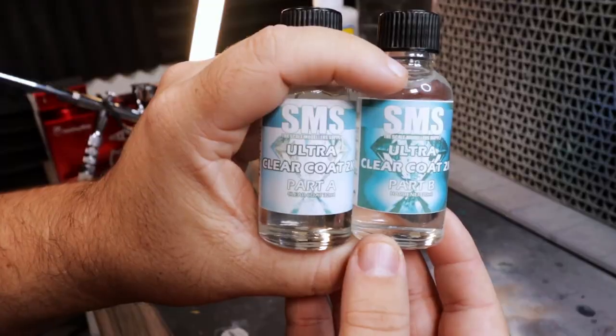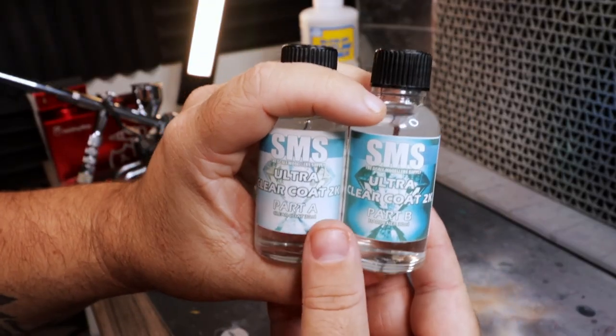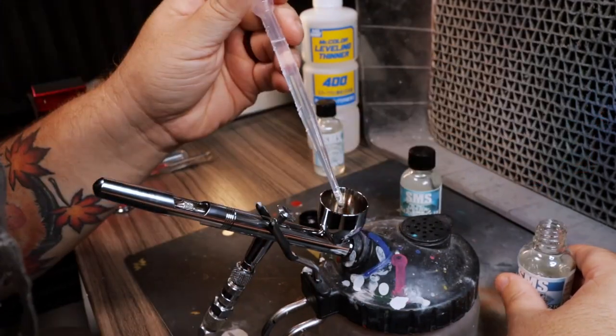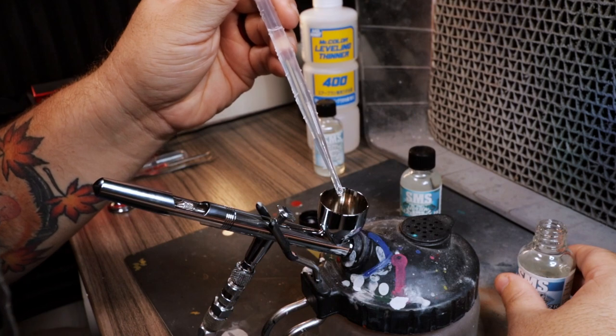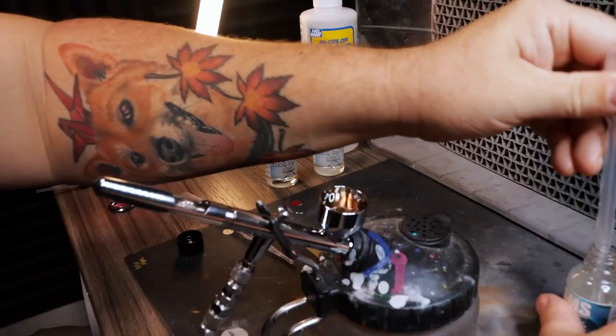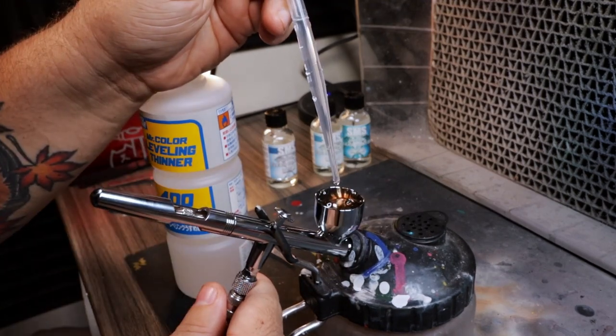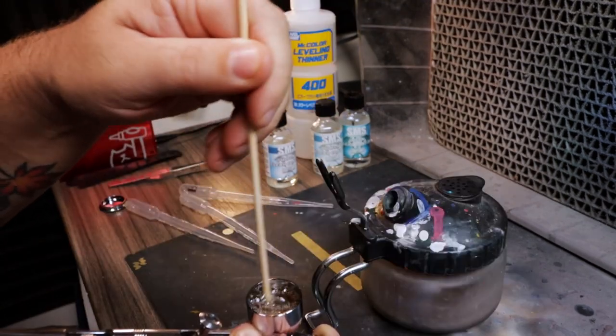When working with 2K clears, you have to realize that there is the actual clear coat itself and then you have an activator or a hardener. The SMS also adds another step of a thinner so that you can make sure that whatever paint you put into your airbrush, you can thin it down appropriately to flow properly. They recommend 10%, but in working with the 10% volume, I found it way too thick for my liking. So I went ahead and added enough until I felt comfortable running the 2K through my airbrush.